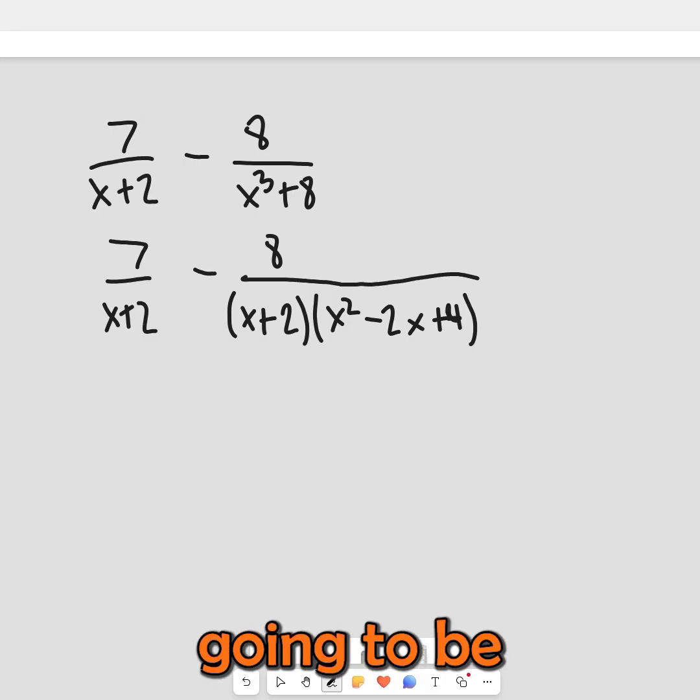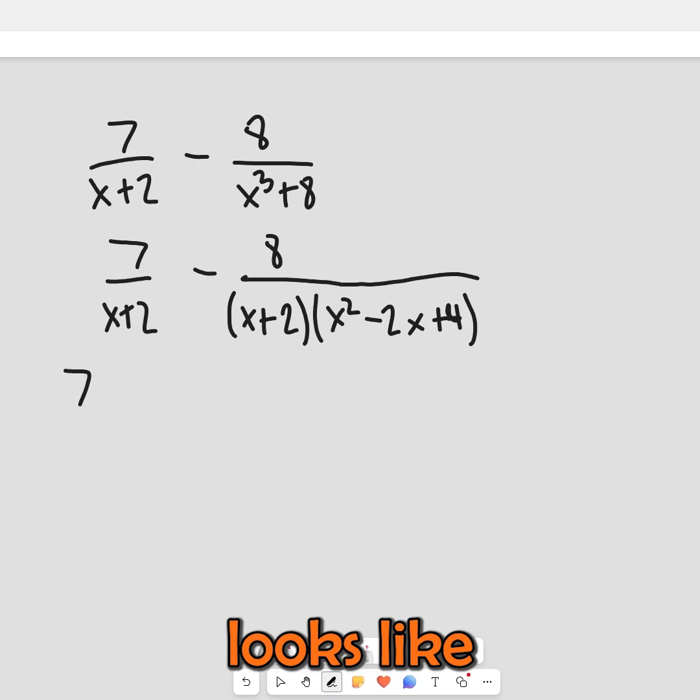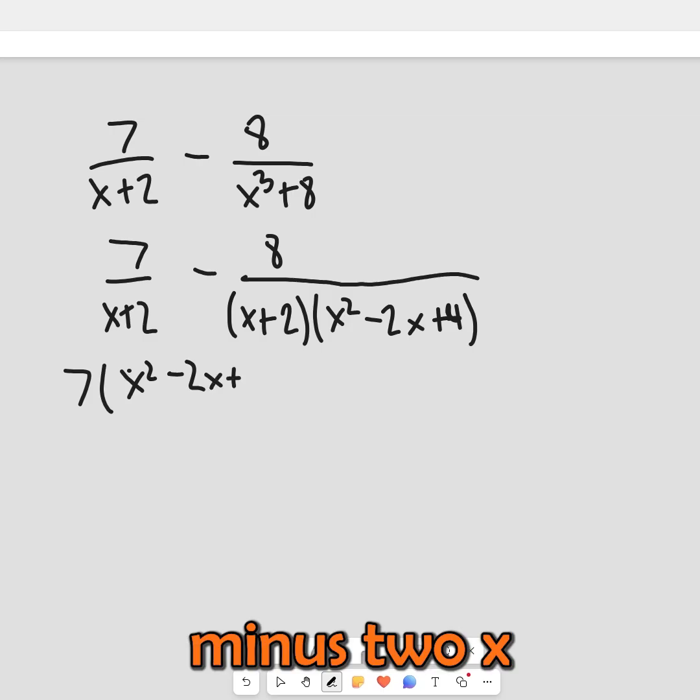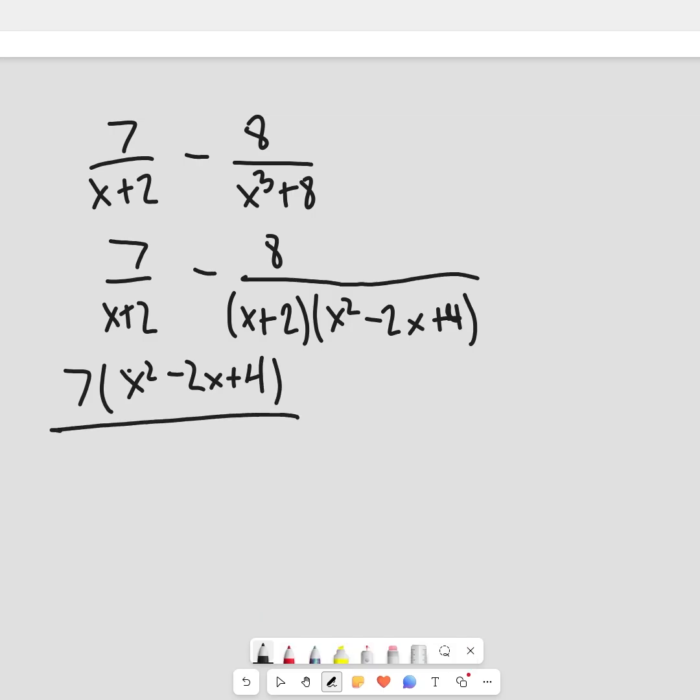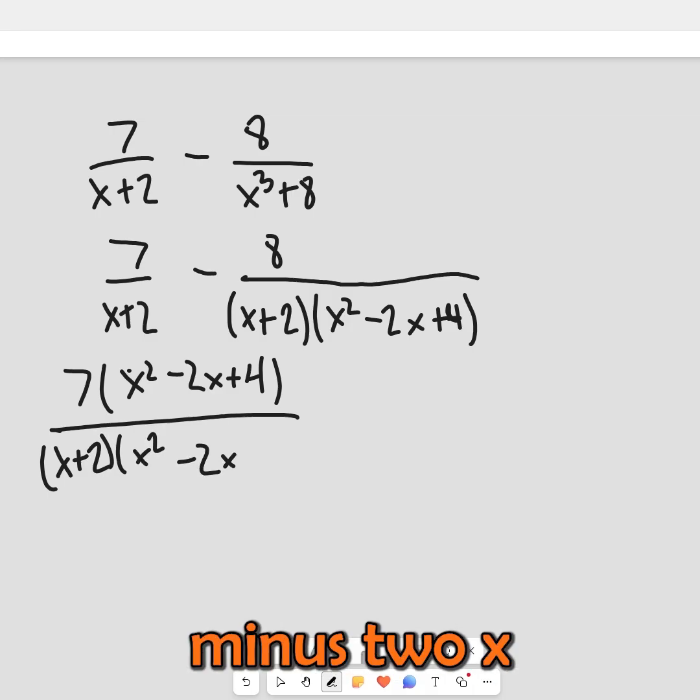So we're going to be multiplying by the x squared minus 2x plus 4. So what this looks like is 7 times x squared minus 2x plus 4 over x plus 2. And again we're multiplying by x squared minus 2x plus 4.